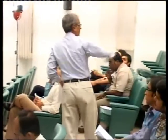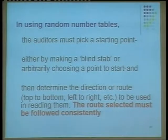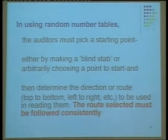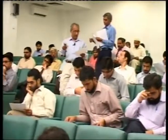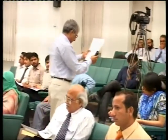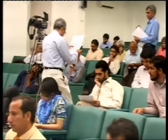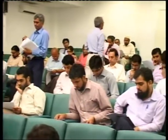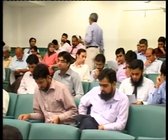We pick a starting point, either by a blind step or an arbitrary point of start. For example, looking at the random number table at column one, row six as a random starting point — there is no specific reason, it is random. Starting from there, the first number is 92870. Since 9287 is not within our invoice number range of 0001 to 4000, it will be rejected and we automatically move further.